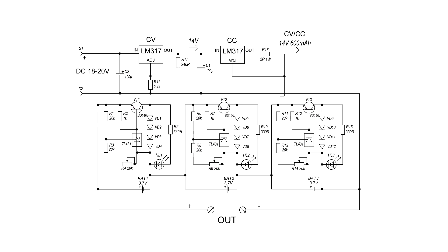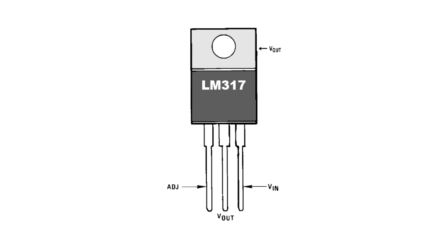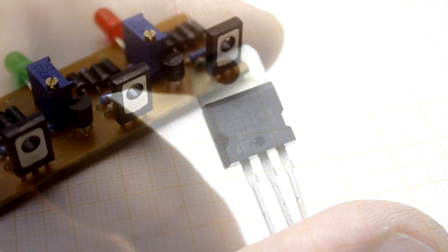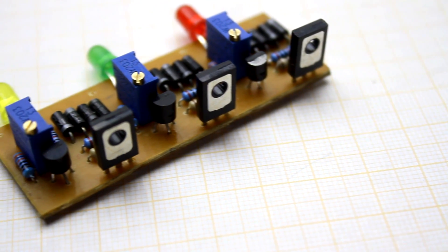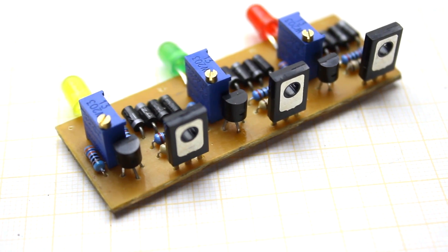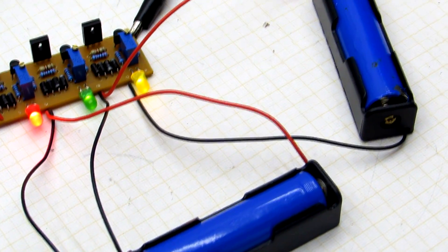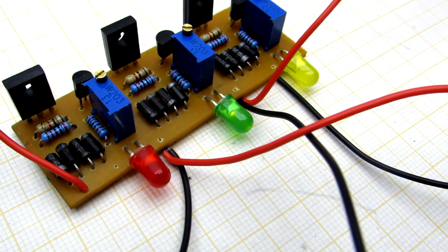Such charging will not be inferior to good industrial chargers, except for heat generation. We don't forget that the circuit is completely linear and power dissipation depends on the charging current. The experiments showed that the balancing circuit works perfectly. The charging process is completed at a specified voltage of 4.2 volts. In general, I recommend this circuit.